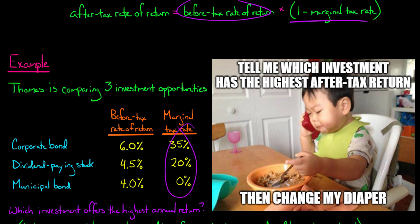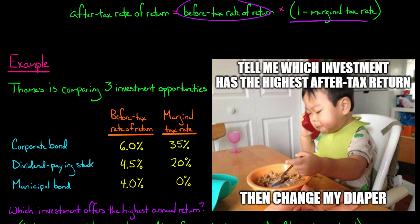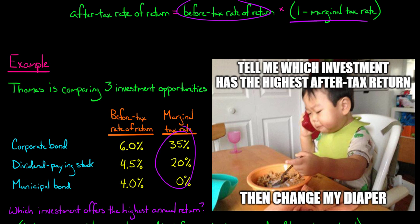We need to take into consideration the different tax rates for each investment. The corporate bond generates interest income, which will be taxed to Thomas at 35 percent. If Thomas buys the dividend-paying stock, those dividends are taxed at just 20 percent. And if Thomas buys a municipal bond, he pays no tax at all on the interest from that municipal bond. So we have different tax rates for each investment and we want to calculate the after-tax rate of return.